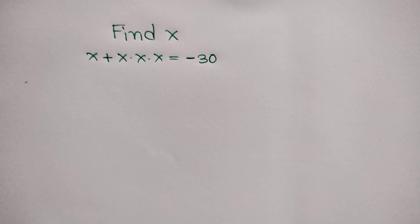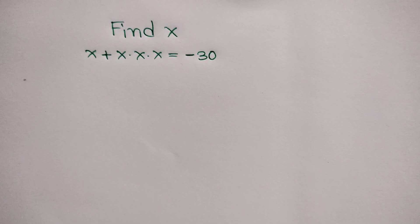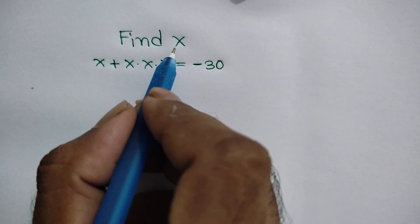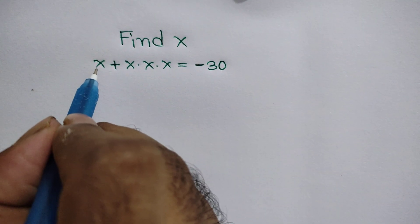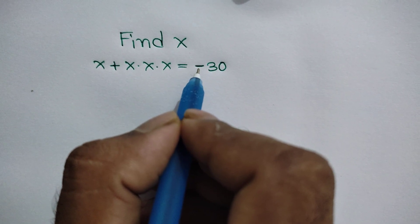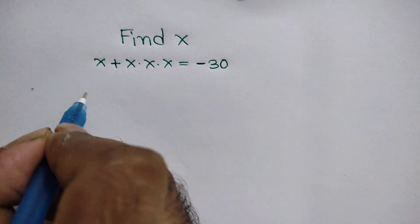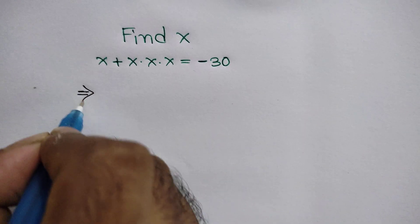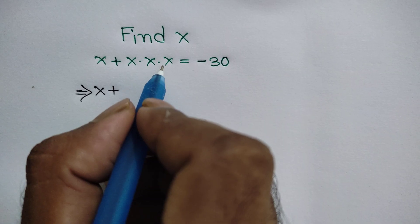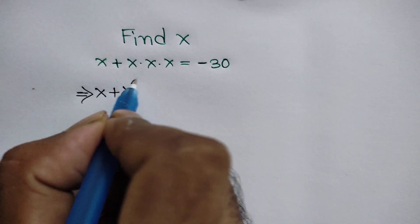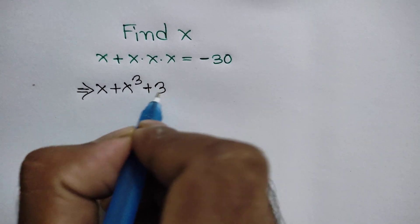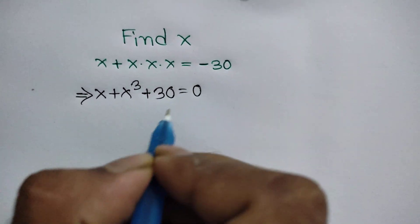Hello everyone, welcome to my YouTube channel. In this video I am going to show how to find the value of x, where x plus x times x times x is equal to negative 30. So x plus x times x is x squared, and x squared times x is x cubed. Taking this negative 30 to the left side we get positive 30, equal to 0.